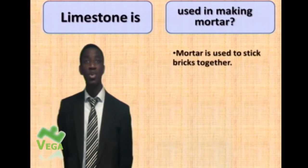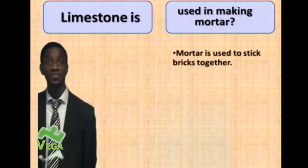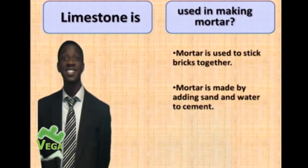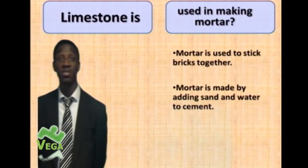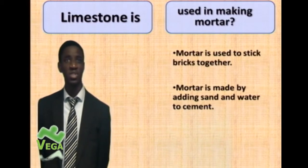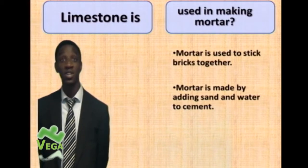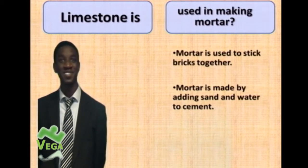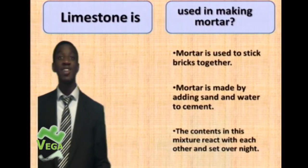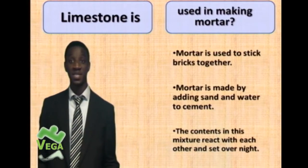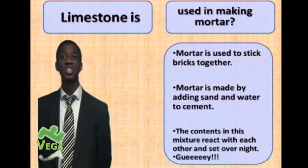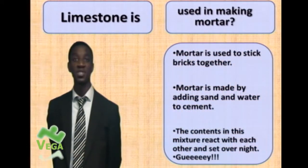Mortar is used to stick bricks together. Very similar to making cement — it's just sand and water added to the cement. So from cement, you can make mortar by just adding sand and water. The contents react with each other and they mix. When you leave this to set overnight, you have a nice gooey substance which is known as mortar.